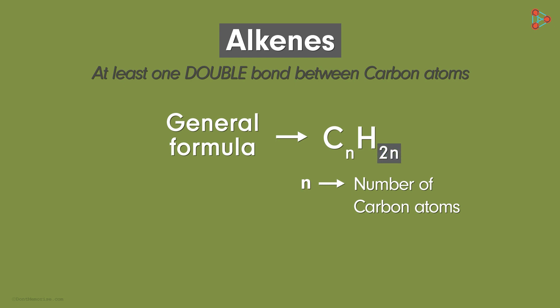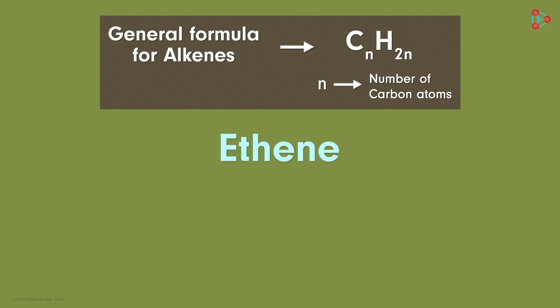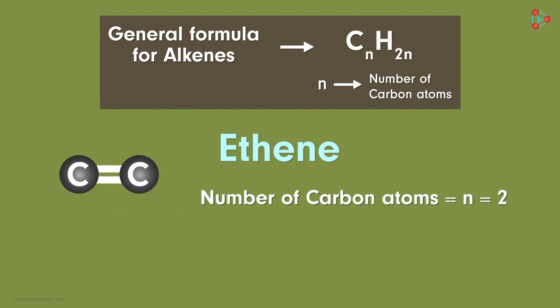The number of hydrogen atoms in an alkene will be double the number of carbon atoms. That's right. For example, the simplest alkene is ethene. It has two carbon atoms sharing a double covalent bond, so the value of n is 2. What will be the number of hydrogen atoms in ethene?